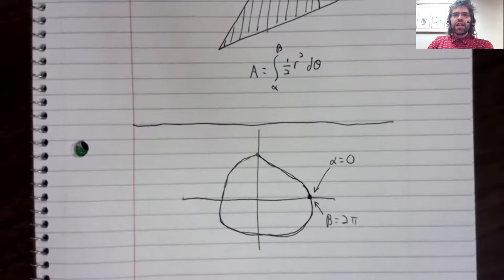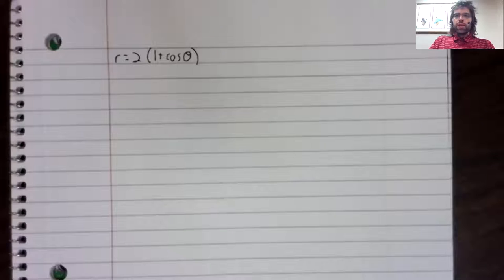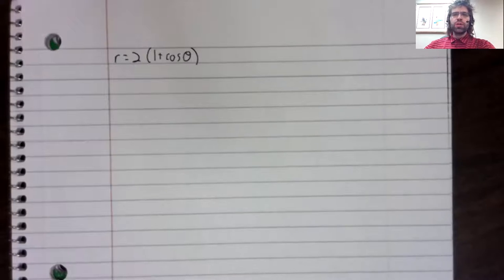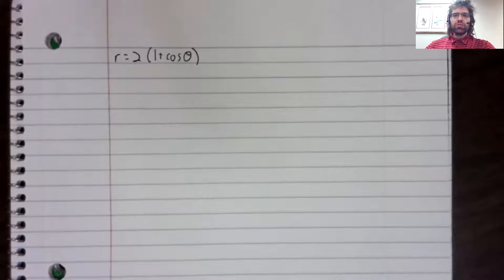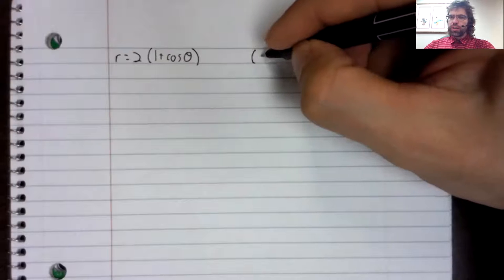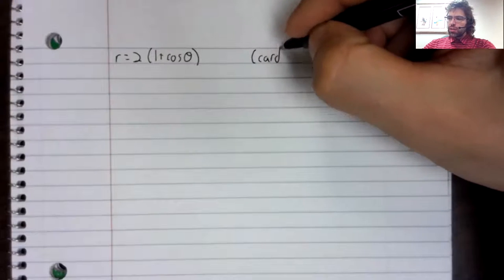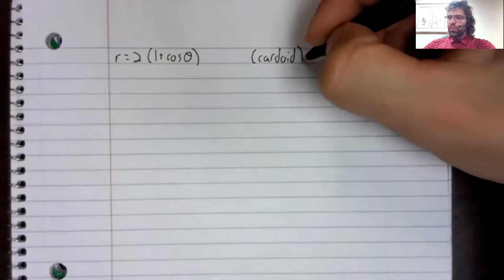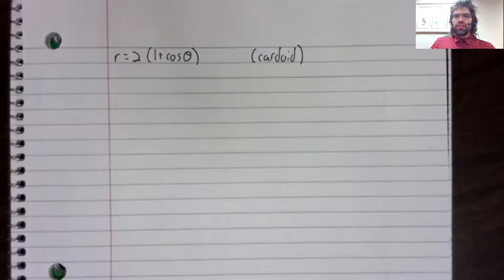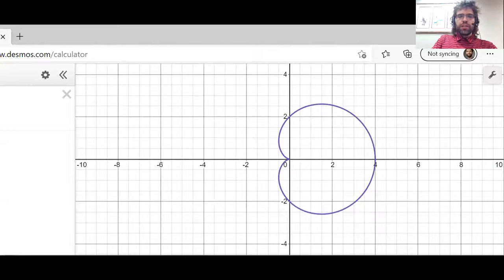Let's look at an example. R equals two times one plus the cosine of theta. The shape that this equation gives us is called a cardioid, because it looks like a heart. Let's find the area of this region.